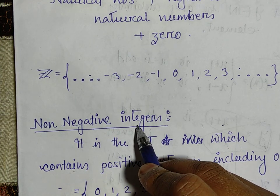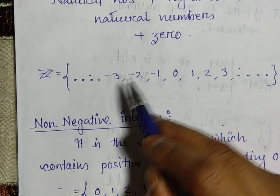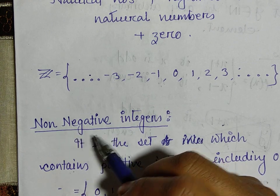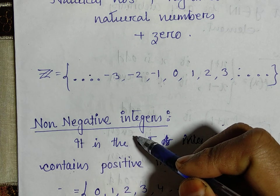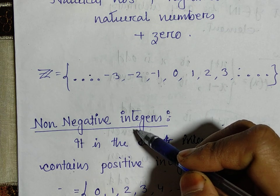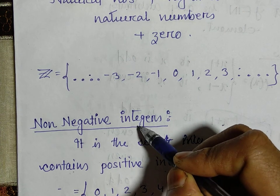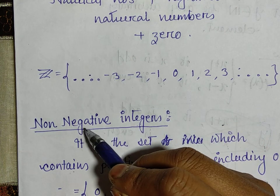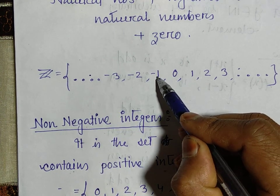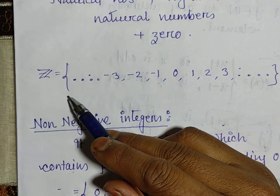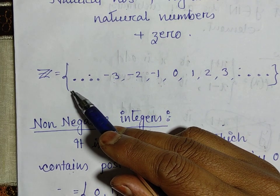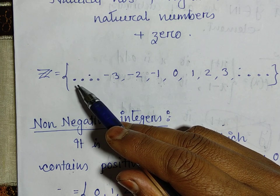Now, non-negative integers: the topic name tells us we are not supposed to consider negative integers. We know that from minus 1 to minus infinity are negative integers. So from the set of integers, we will exclude the negative integers — minus 1, minus 2, minus 3, up to minus infinity. Then the remaining elements will be known as non-negative integers.